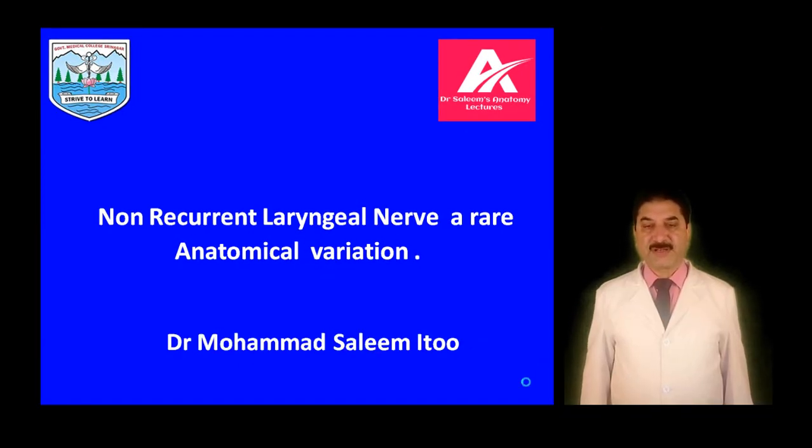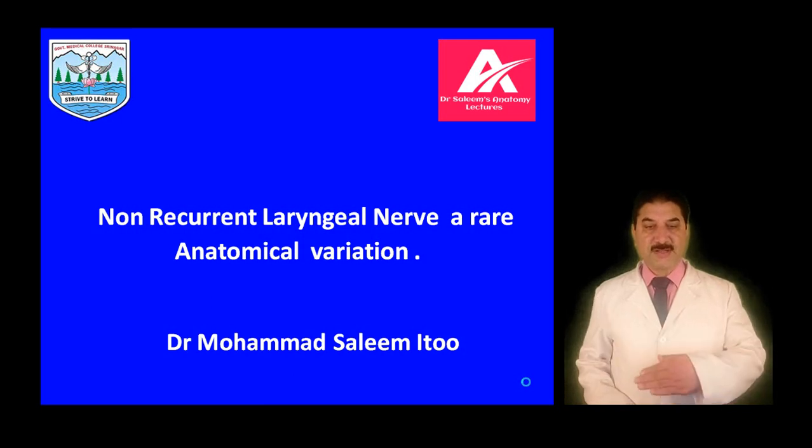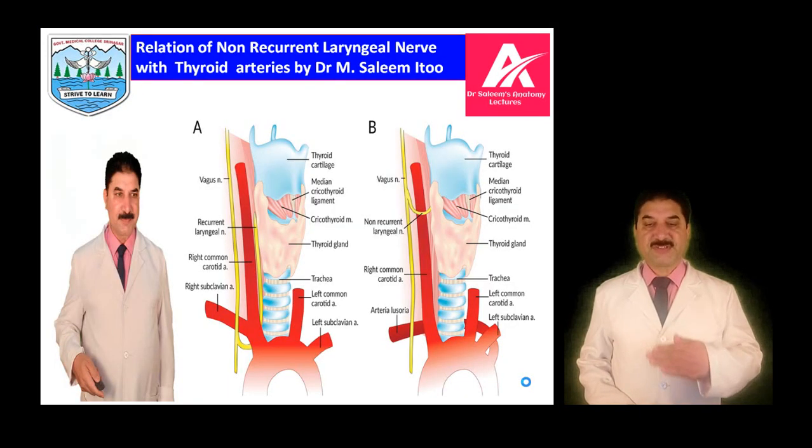Right and left recurrent laryngeal nerves are branches of the vagus. The right recurrent laryngeal nerve hooks around the first part of the subclavian artery and re-enters the neck in the tracheoesophageal groove. The left recurrent laryngeal nerve enters the thoracic cavity and hooks around the ductus arteriosus to enter the tracheoesophageal groove. The recurrent laryngeal nerve supplies all intrinsic muscles of the larynx except the cricothyroid, which is innervated by the external laryngeal branch of the superior laryngeal nerve.